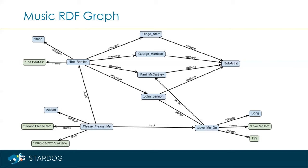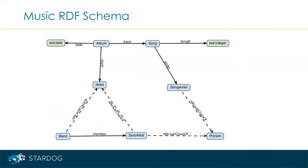For example, we see the length of the La Me Do song is 125 seconds. The release date of the Please Please Me album is March 22, 1963. We might have an RDF schema that describes the classes and the properties in this graph. For example, we can define an artist class as the superclass of band and solo artists using the rdfs:subClassOf property. In RDF, we can also declare domain and ranges for properties.